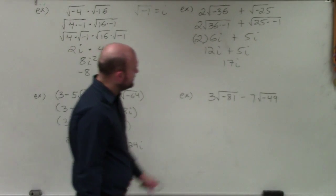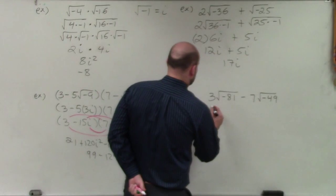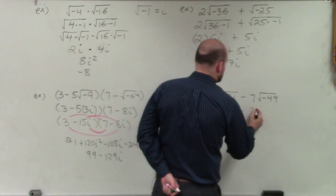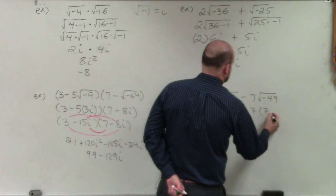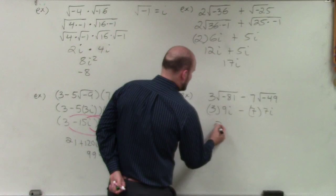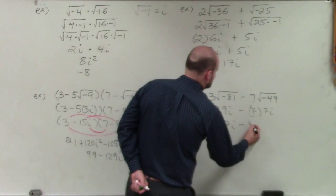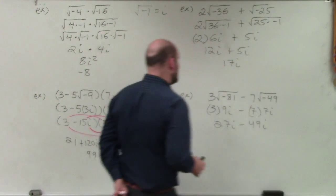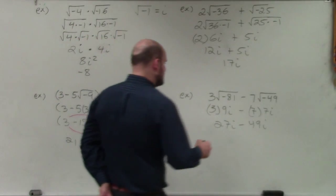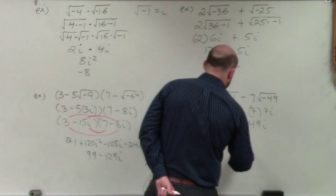Not too bad, right? Over here, I'll simplify these real quick. That's 3 times 9i minus 7 times 7i. I have 27i minus 49i, which leaves us with 22i.